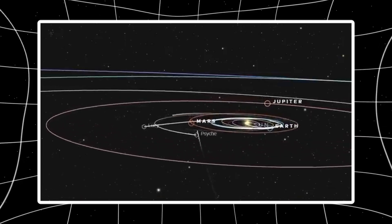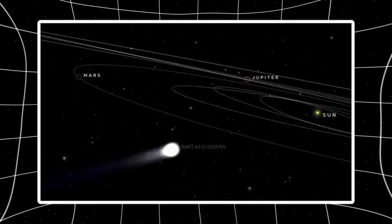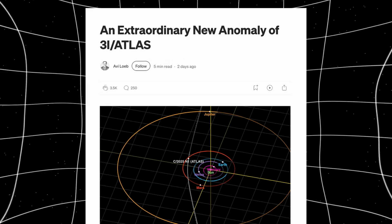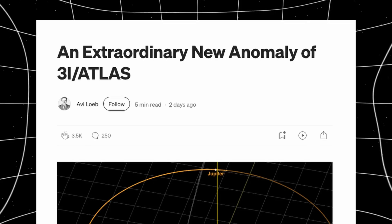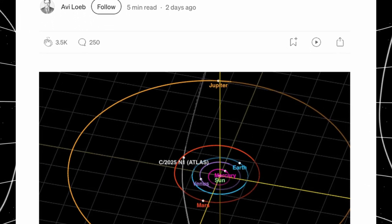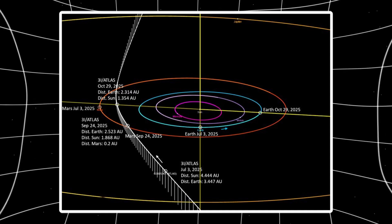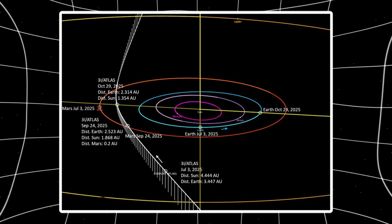You might think that's just another close approach. A random flyby. Space is big. Things pass near planets. Except that distance isn't random. It's almost exactly Jupiter's hill radius. The invisible gravitational boundary where Jupiter's pull becomes stronger than the Sun's. The difference between 3i Atlas's path and that boundary?